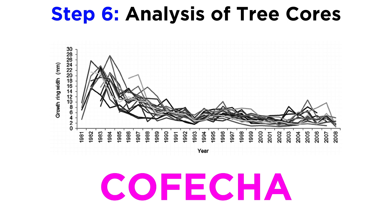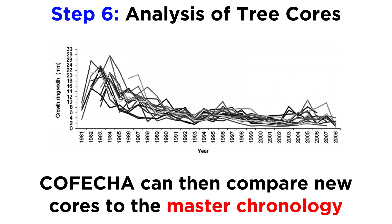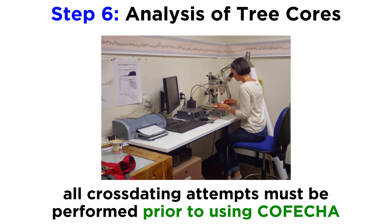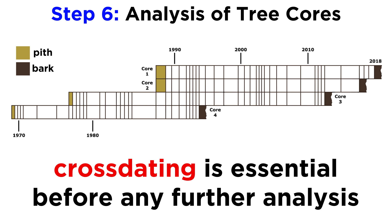The cross-dating of these measurements can be verified using free software called COFECHA. COFECHA checks for correlations between sample measurements and highlights both strong correlations and anomalies. By statistically generating a master chronology from the cores entered into the program, COFECHA checks the dating of each core sample against the synthesized master chronology. Depending on its readout, a dendrochronologist may need to revise measurements or check original cores for anomalies. Importantly, best attempts at accurate cross-dating are conducted by the scientist prior to using COFECHA. The entire cross-dating process takes more time than any other step in the lab, but is absolutely essential before any further analysis.